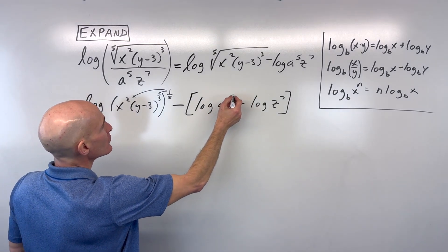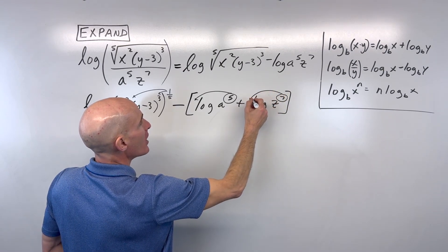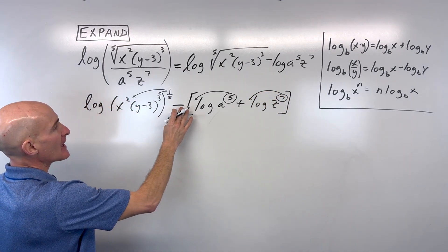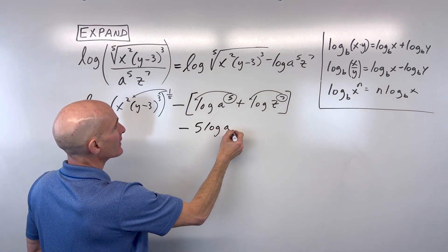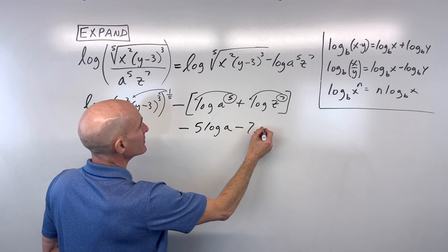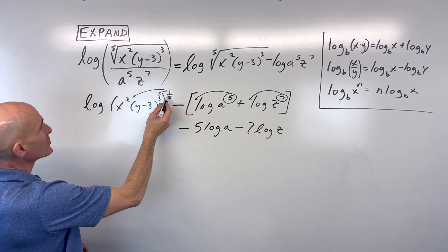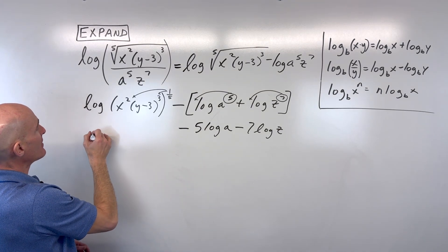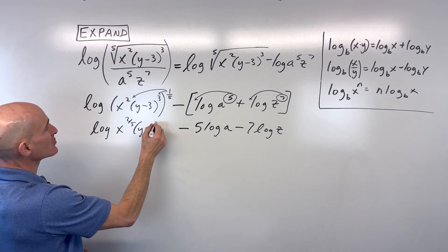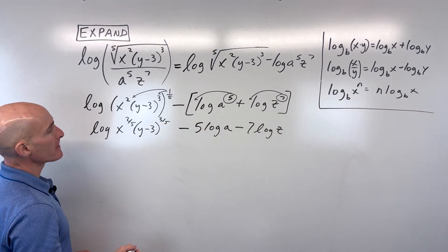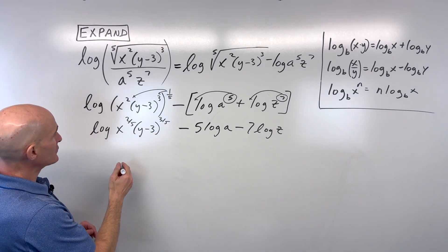Now what we can do is we can bring these powers down in front of the log. That's our power property. And I'm going to distribute this negative into the parentheses. So that's going to give us negative 5 log a minus 7 log z. And over here, we're just going to distribute the one-fifth. So this came out to log of x to the two-fifths and y minus 3 to the three-fifths. Notice these are multiplied as well. So we can write this as a sum of two logs.